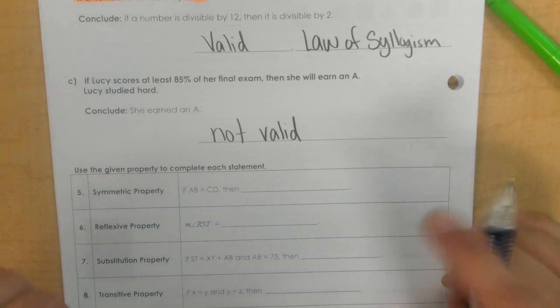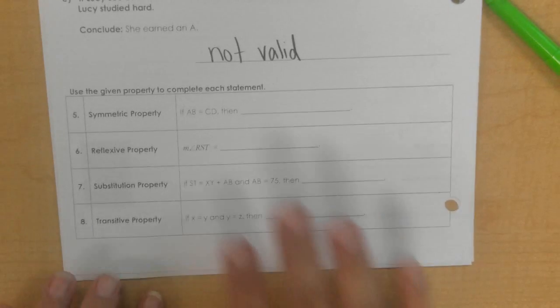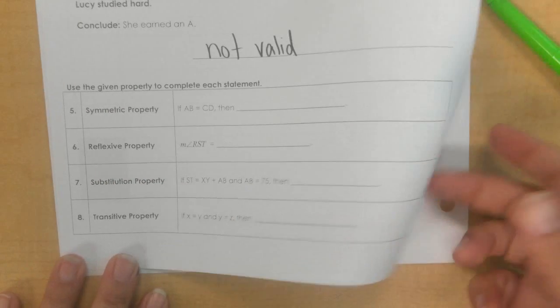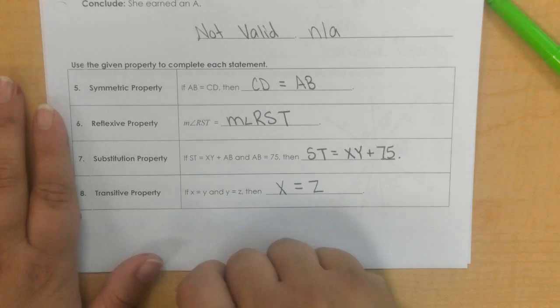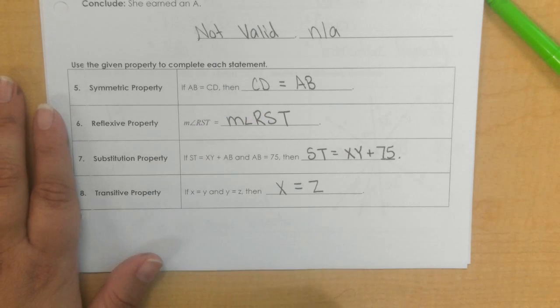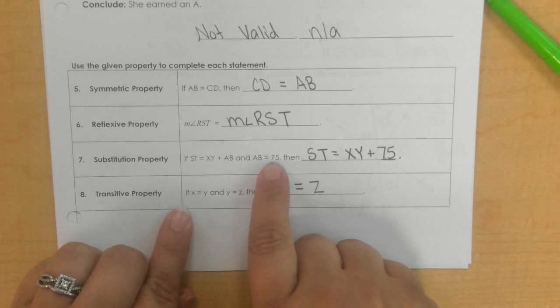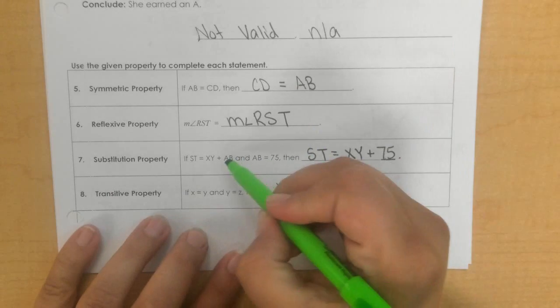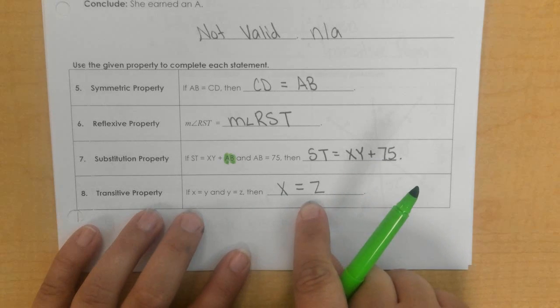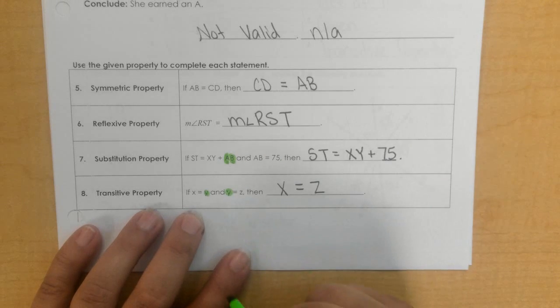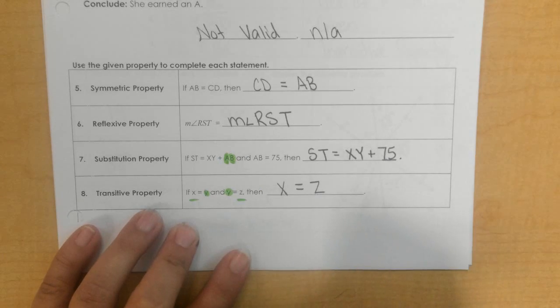Okay, on the bottom down here, we can just check those answers. So we just flip them around for symmetric, it's the exact same thing. For reflexive, I substituted the 75 in for AB here. Okay, and then transitive, since this is the same, we say that X equals E.